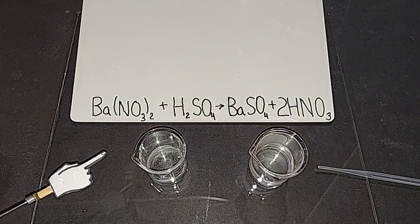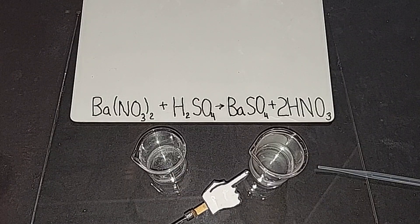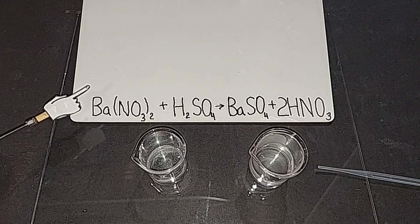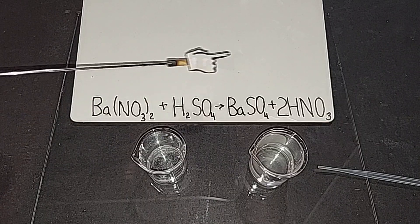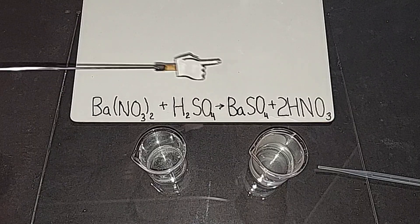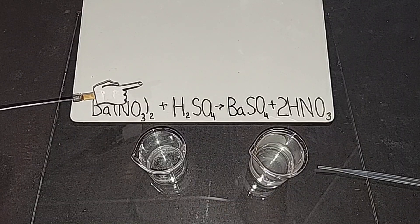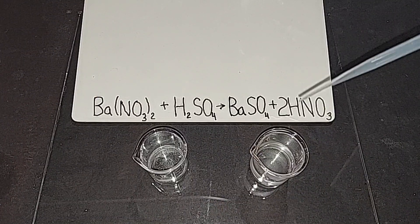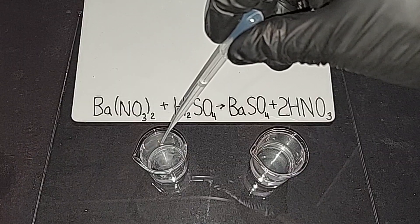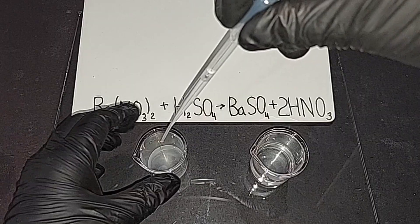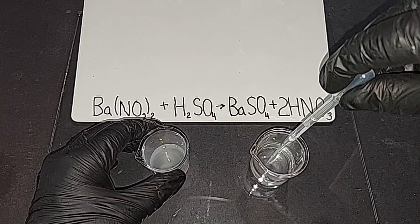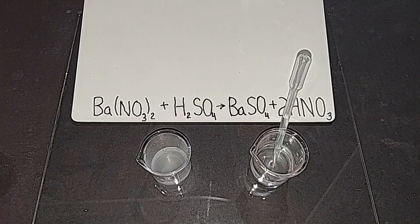On the left we have the sulfuric acid we just made. On the right, I dissolved half a gram of barium nitrate in 30 mL of water. According to the equation, barium nitrate plus sulfuric acid produces barium sulfate, which is insoluble and falls out of solution, plus two nitric acids. This is the most expensive way to make nitric acid, but it's a great test for sulfuric acid. Pouring it in — we can see a white precipitate forming. We have definitely made sulfuric acid!